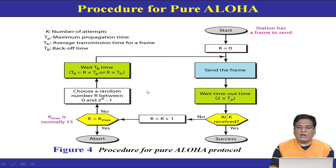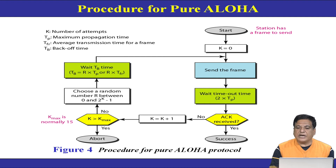In Pure ALOHA, the maximum efficiency achieved is 18%. Efficiency is defined as the number of frames successfully received by the receiver divided by the number of frames sent by the sender. This means the receiver will successfully receive a maximum of 18 frames without any collision out of every 100 frames sent.